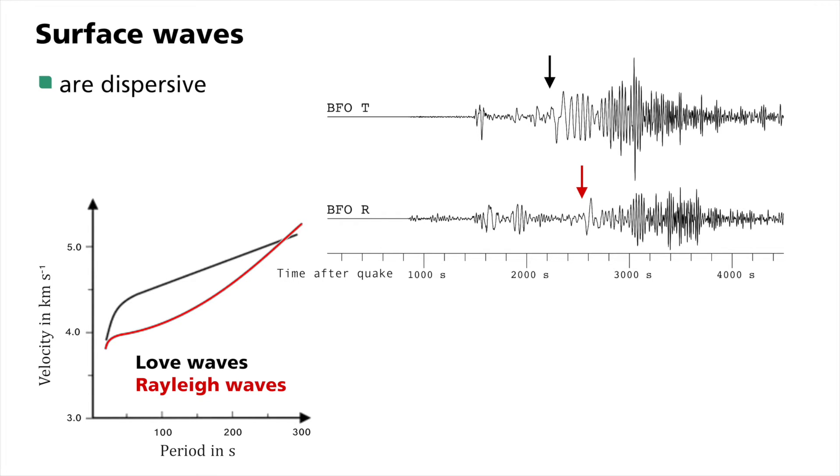This graph shows specific values for the propagation velocity. What you are seeing is the propagation velocity as a function of its period of oscillation, which is the reciprocal of the frequency. We see that Love waves are generally faster than Rayleigh waves. Both types of surface waves travel at a velocity of approximately 4 to 5 km per second.